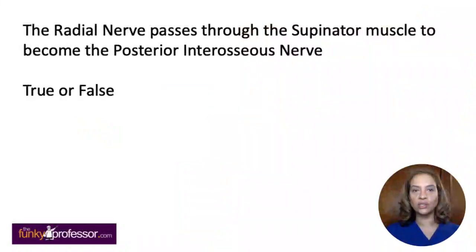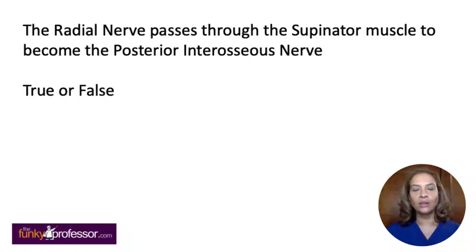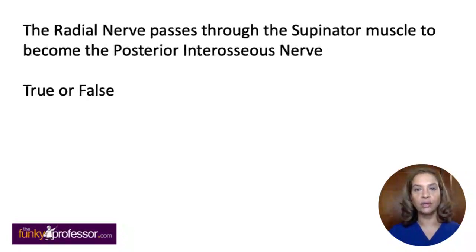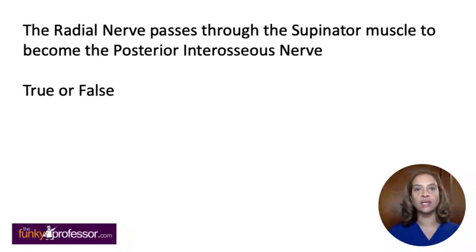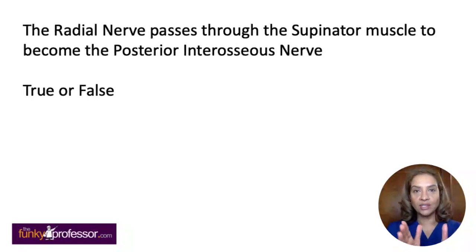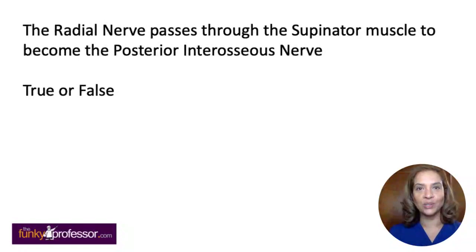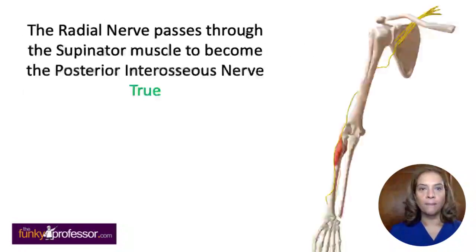The next question: the radial nerve passes through the supinator muscle to become the posterior interosseous nerve. You can stop the video and pause it if you'd like to take a few more moments to think about the answer. The answer is in fact true.